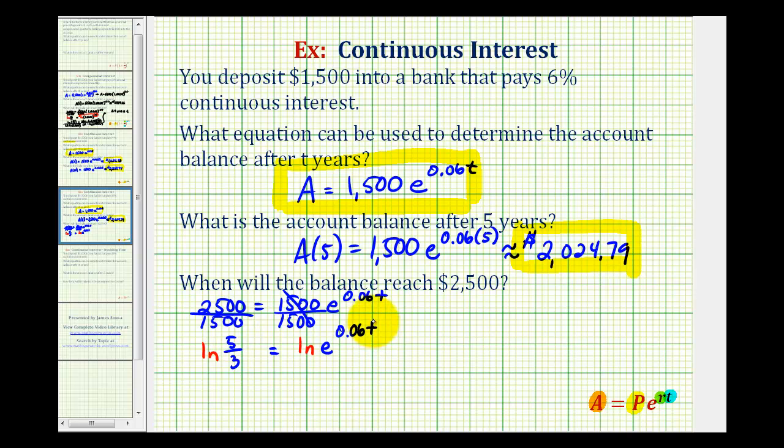Once we do this, we can apply the power property of logarithms here and move this exponent to the front. So we'd have natural log of 5/3 equals 0.06t times natural log e. But remember, natural log e is equal to 1. Multiplying by 1 isn't going to change anything.